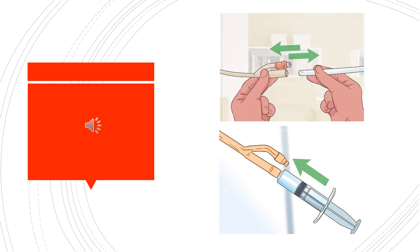Number two, you need to explain the procedure to the client in full so they understand what is about to happen. Number three, assemble equipment, which includes a flush kit, sterile water, alcohol swabs, a towel, clean gloves, and the client's urinal. Number four, pour sterile water, about 100 to 200 milliliters, into the sterile solution container located in the flush kit itself.